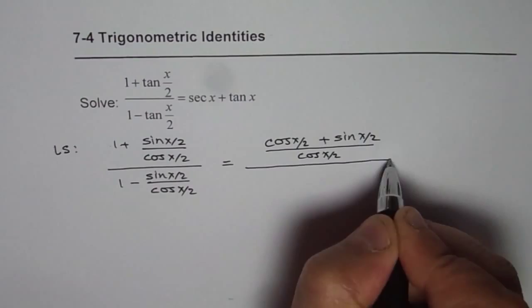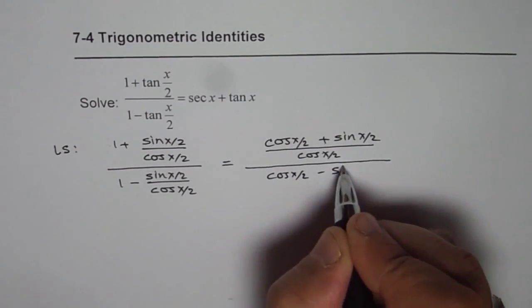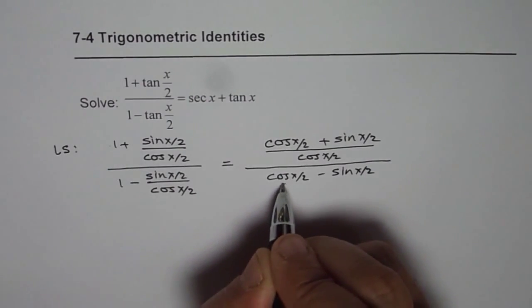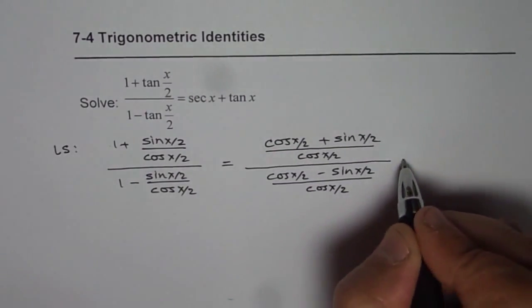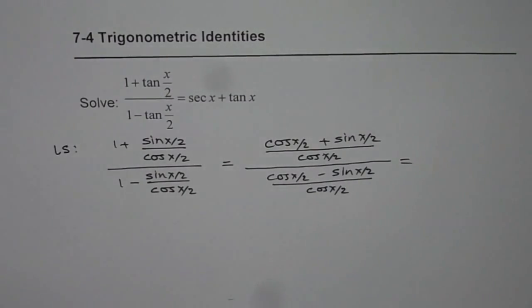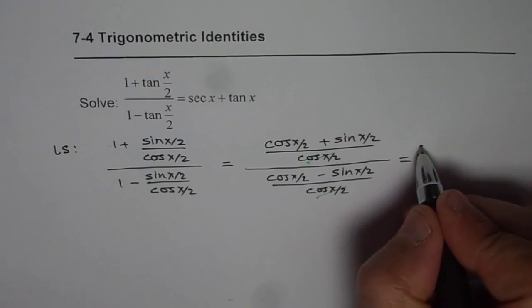This can be simplified since the denominators cancel out. So we can write this as (cos(x/2) + sin(x/2))/(cos(x/2) - sin(x/2)).